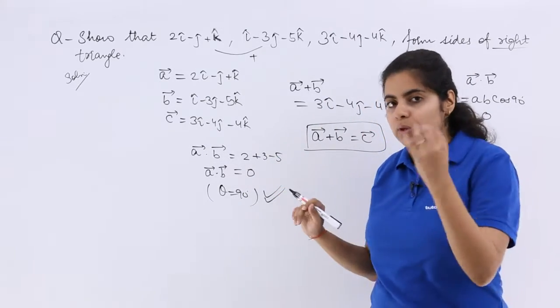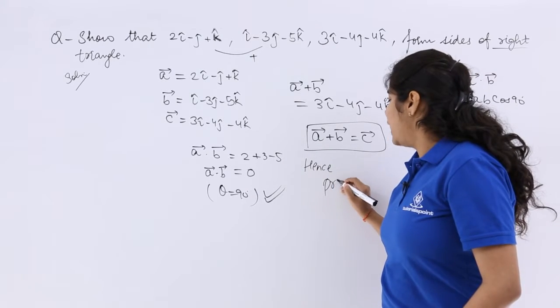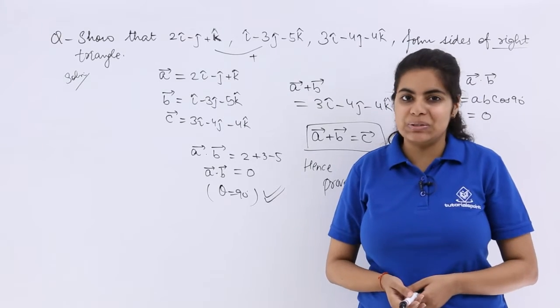So because of these two reasons, what is the answer? Hence, I have proved that these form the vertices of a right angle triangle.